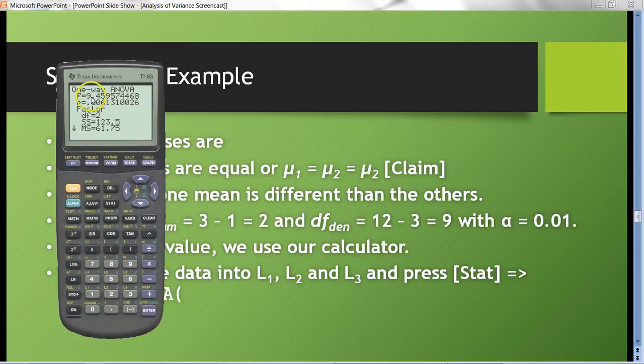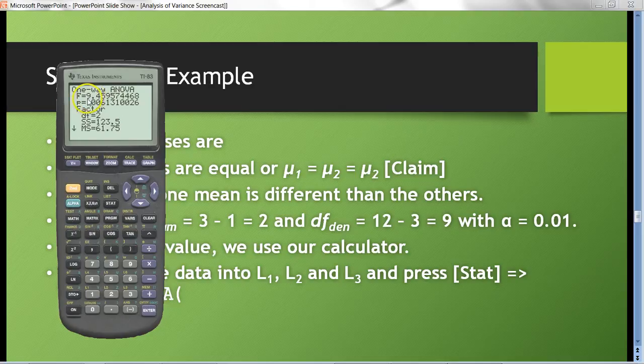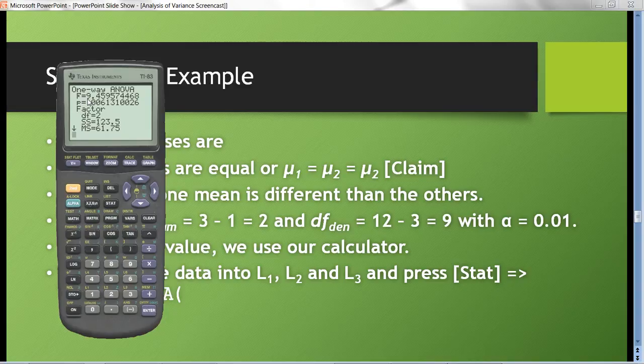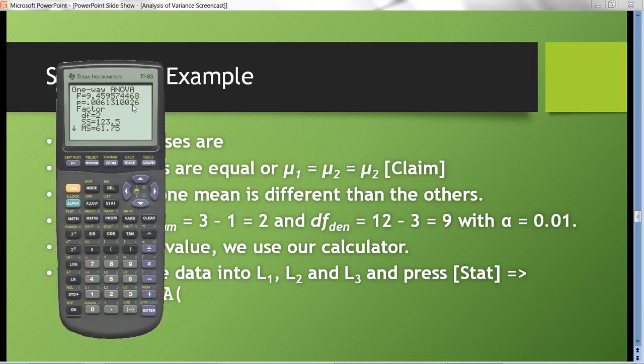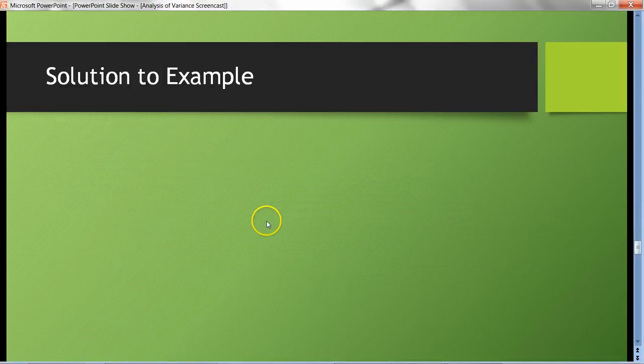In case you want to know, there's also the test statistic, 9.45957. If you want to use the traditional method—you probably don't have an f-distribution table—you're probably more likely to use the p-value method here. Let's go ahead and wrap this up and write our conclusion.